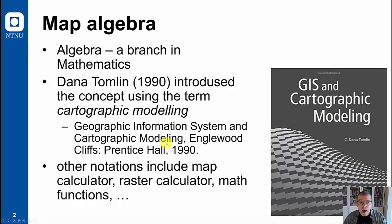Algebra is a branch of mathematics, and the term was introduced in a similar concept by Dana Tomlin more than 20 years ago when she used the term cartographic modeling in this book, GIS and Cartographic Modeling. There are other notions circulating, including map calculator, raster calculator, map function operation, but they are generally referring to the same kind of operation.